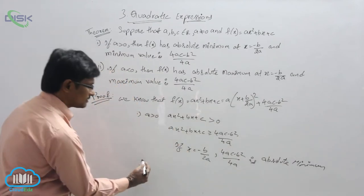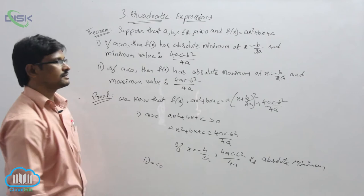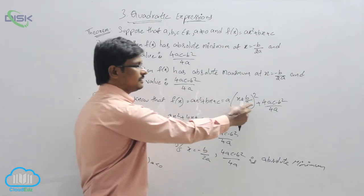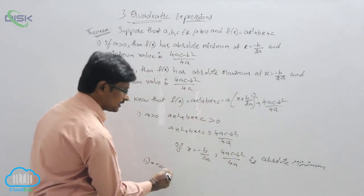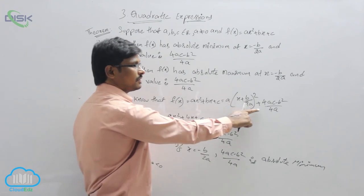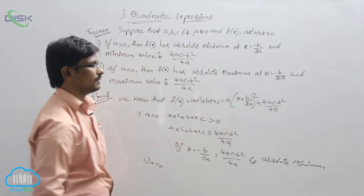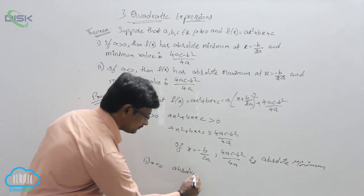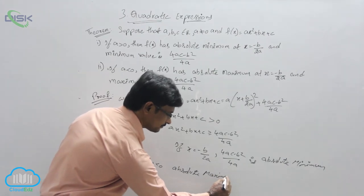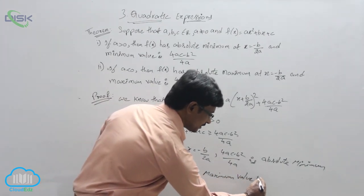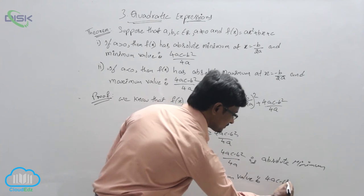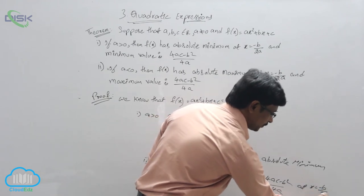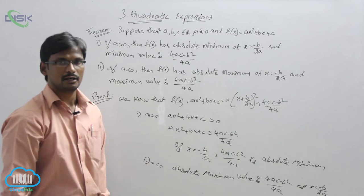Second case: if a < 0, then a(x + b/2a)² is a negative value, so ax² + bx + c ≤ (4ac - b²)/4a. This means if a < 0, the absolute maximum value is (4ac - b²)/4a, occurring at x = -b/2a.